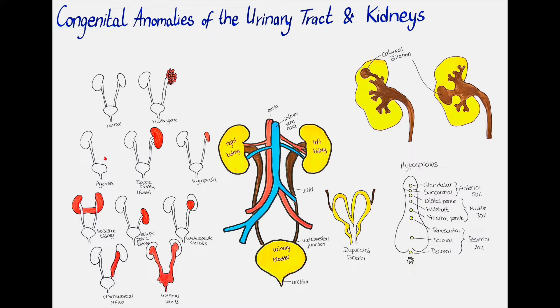Let's start at the very top, or the most superior aspect, with the kidneys. They can have anomalies in their number, size, position, relation to each other, their structure, or their blood supply. Anomalies in the number of the kidneys include agenesis, aplasia, unilateral multicystic dysplasia, and supernumerary kidneys.